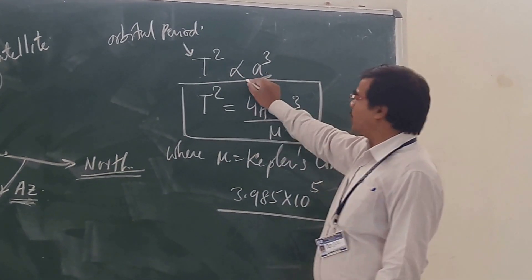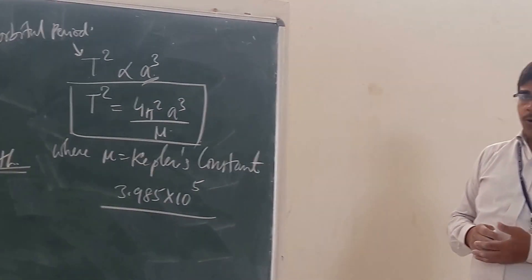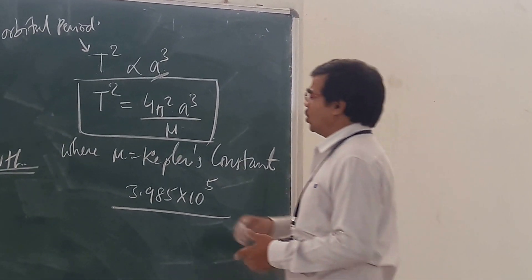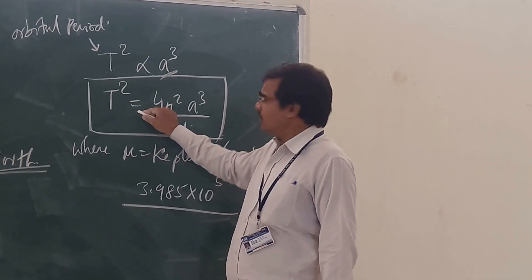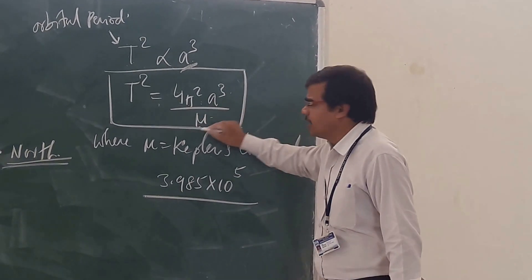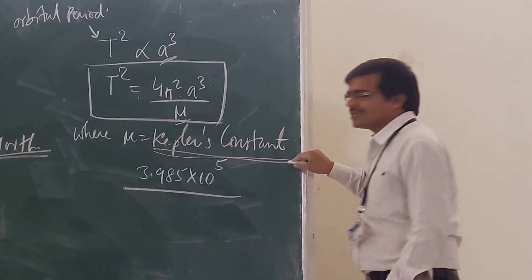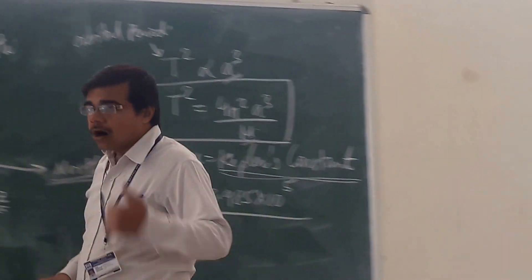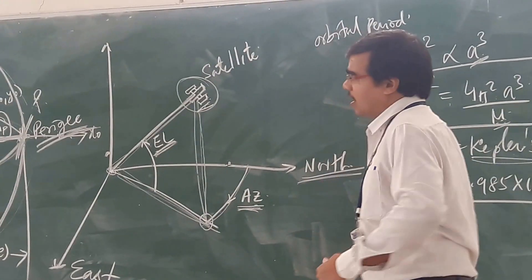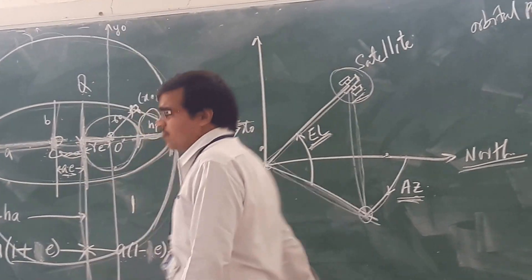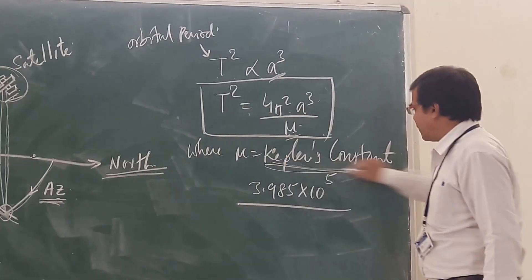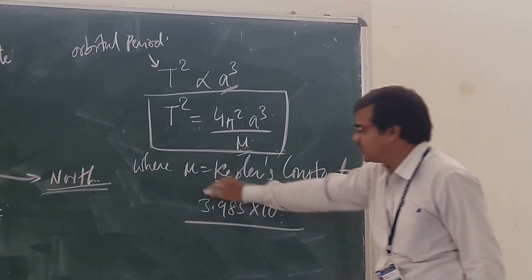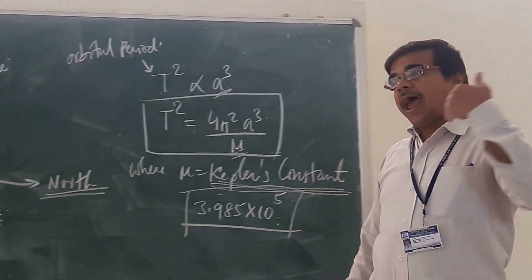We know that the square of your orbital period is proportional to the cube of a — your T² is proportional to a³. This is from Kepler's third law. As it is proportional, there will be some constant. So you have T² = 4π²a³ / μ. This μ is the Kepler's constant. If we are considering Earth and satellite, then your Kepler's constant will be equal to 3.985 × 10⁵.